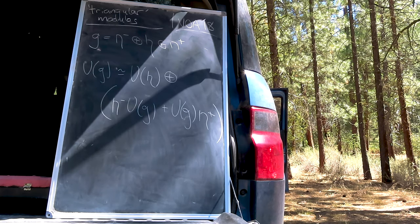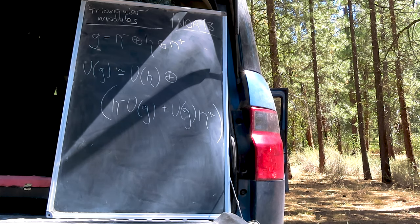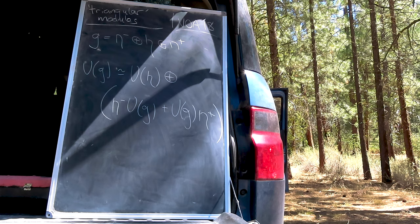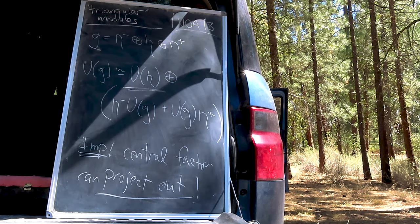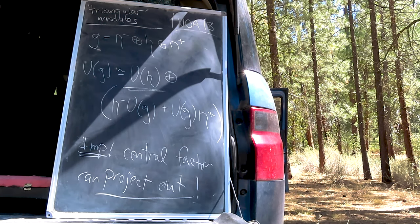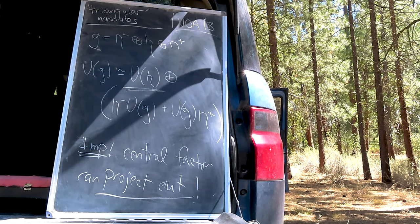This fact helps when we split both U of N plus or minus in the fashion discussed above, which shows us that U of G is decomposable into the direct sum of U of H with some other junk. That other junk are the product terms which, by convention, we have right action by N minus and left action by N plus. And this is an important point because it allows us to easily project out the central factor, U of H.